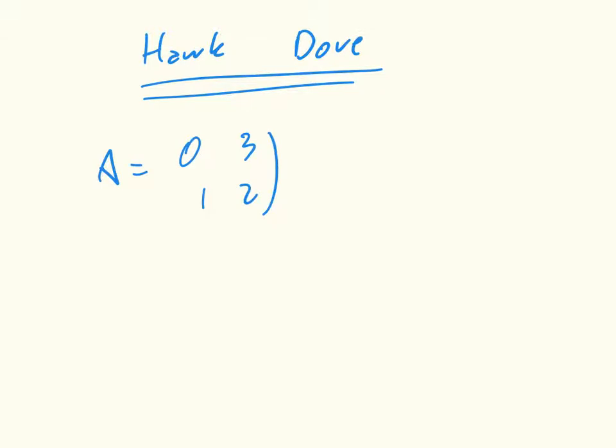Another common game is called the hawk-dove game, and again, this is an important 2x2 game. The idea here is that the utilities are given by these two matrices.